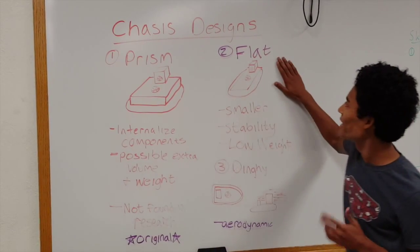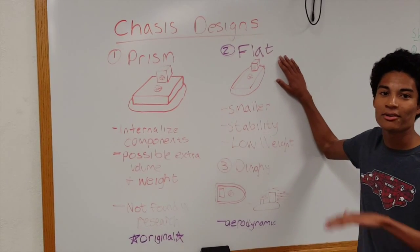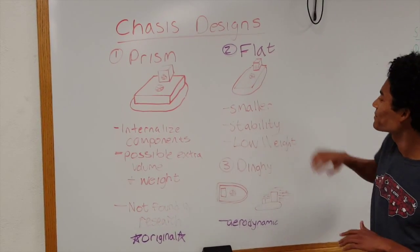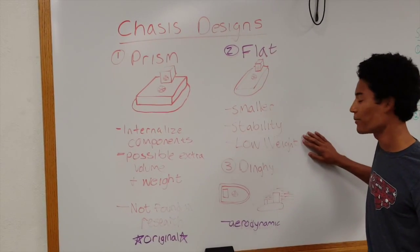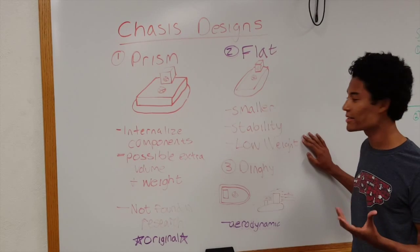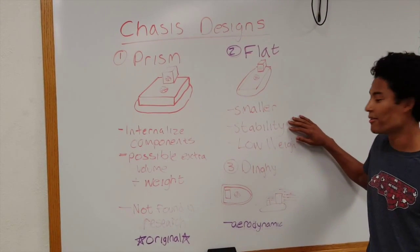Our second design is a flat design which would basically be a cardboard sheet or something like that. The pro is that it would be smaller and therefore less weight, which means we can go faster. It's more stable because it's lower to the ground, lower center of gravity.